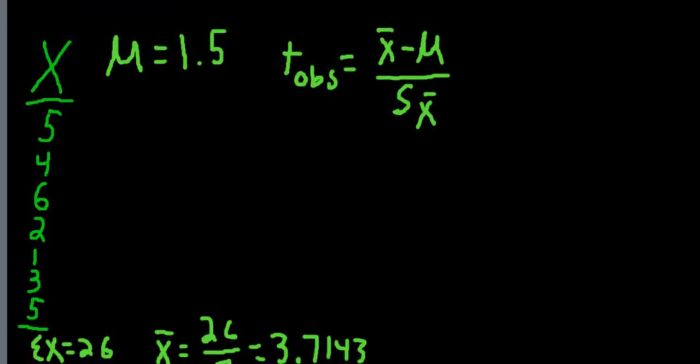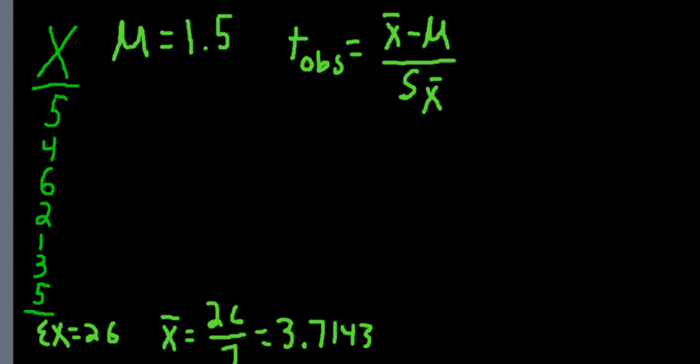So we have the numerator for the equation, which would be 3.7143 minus 1.5. Our next step is we need to get the standard error. To get the standard error, we're going to take the sum of squares, then we're going to turn that into the sample variance, then we're going to turn it into the sample standard deviation, and finally we're going to turn it into the standard error of the mean.